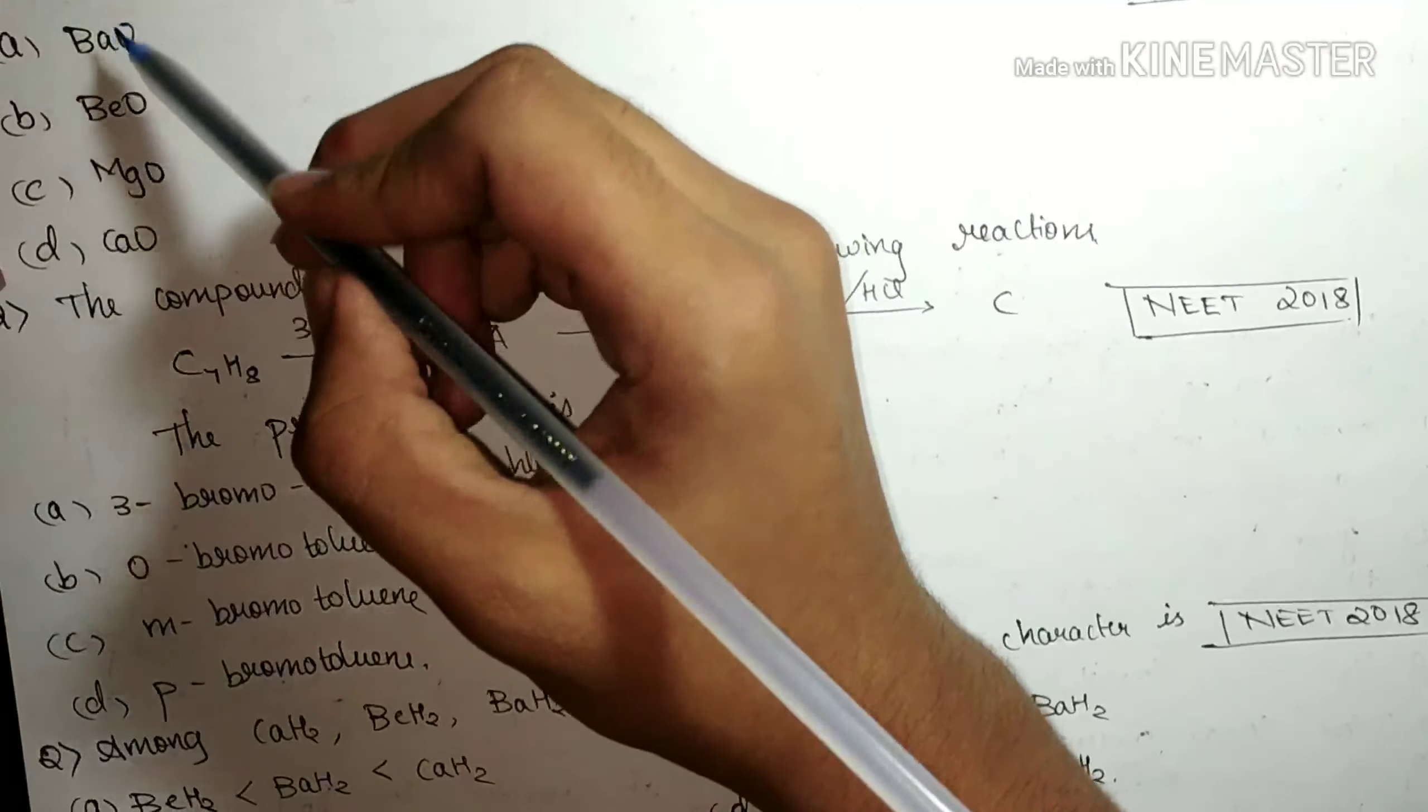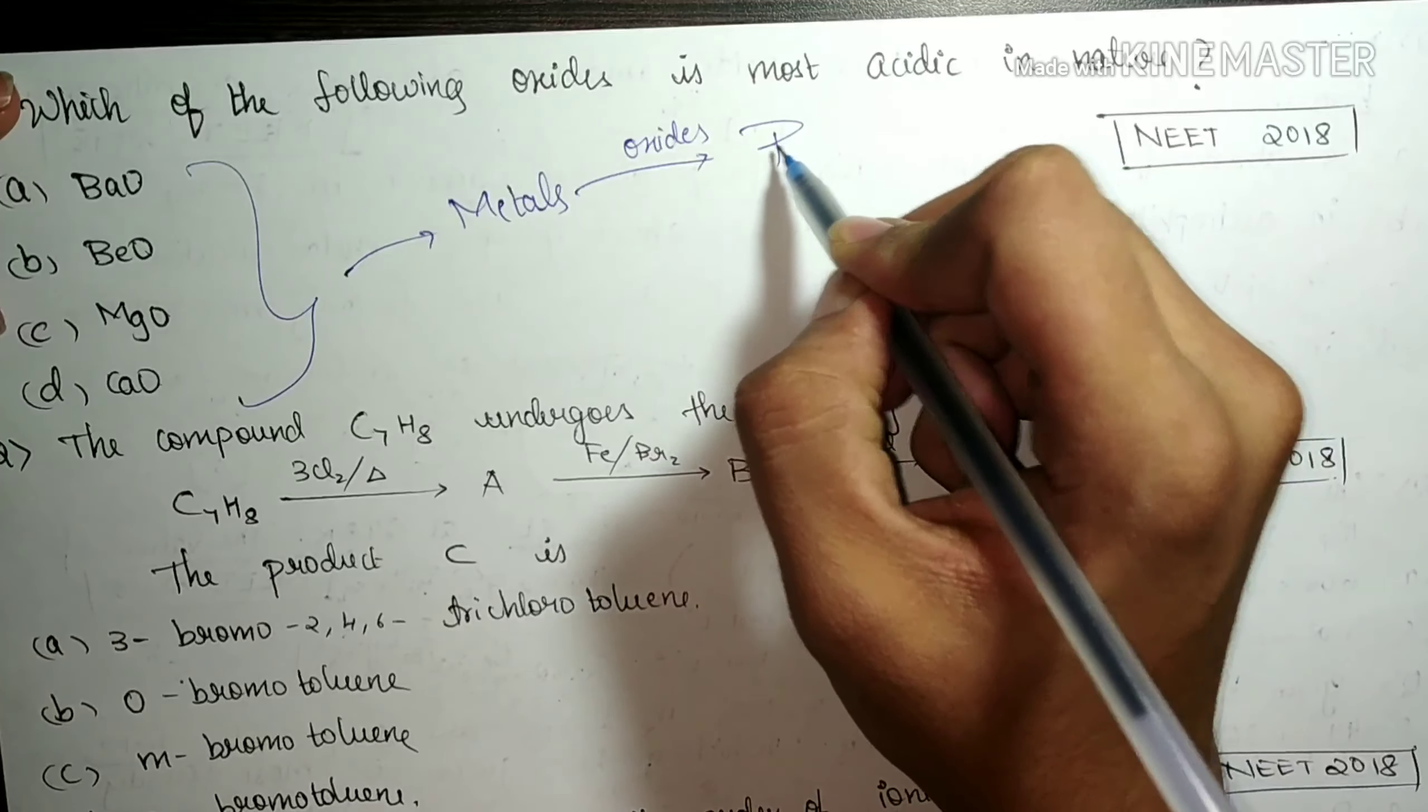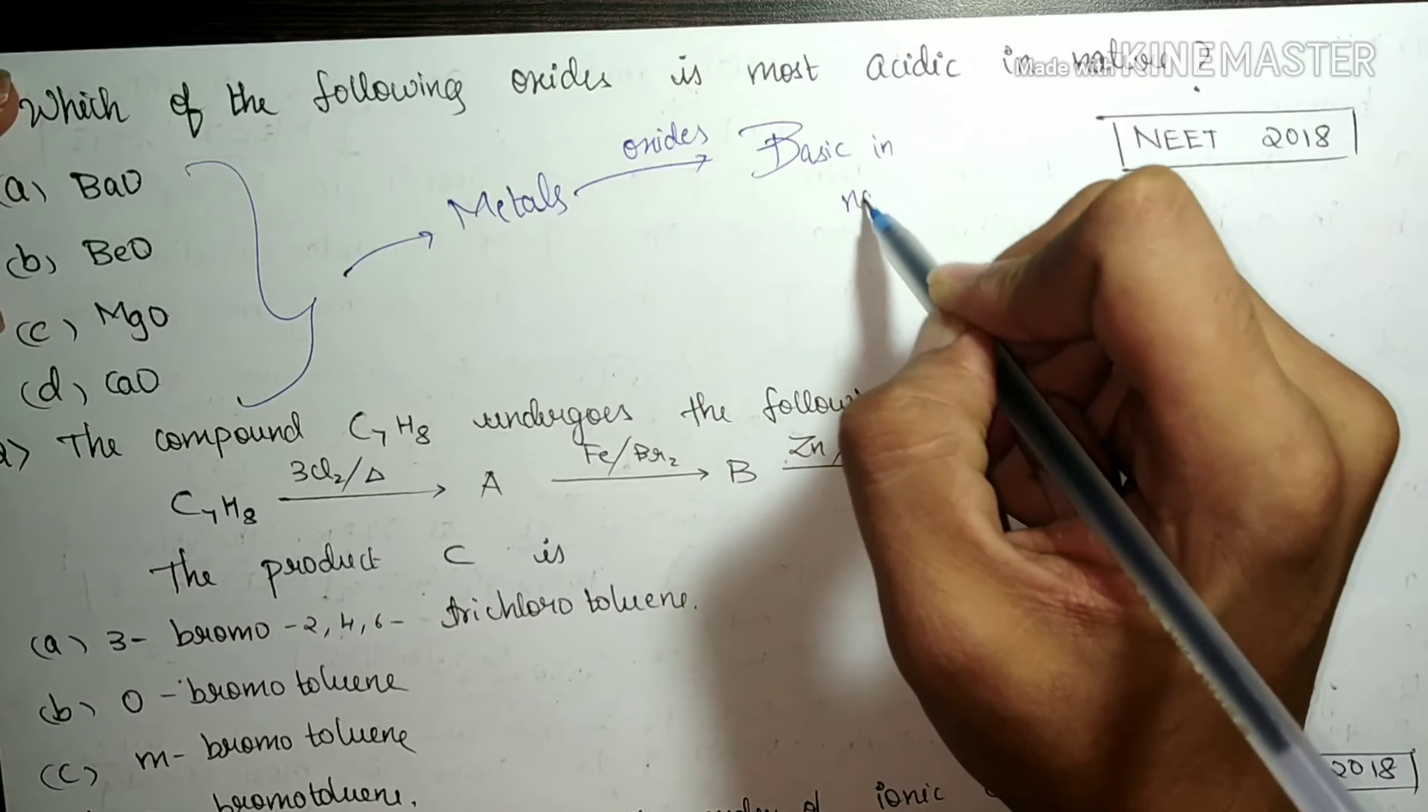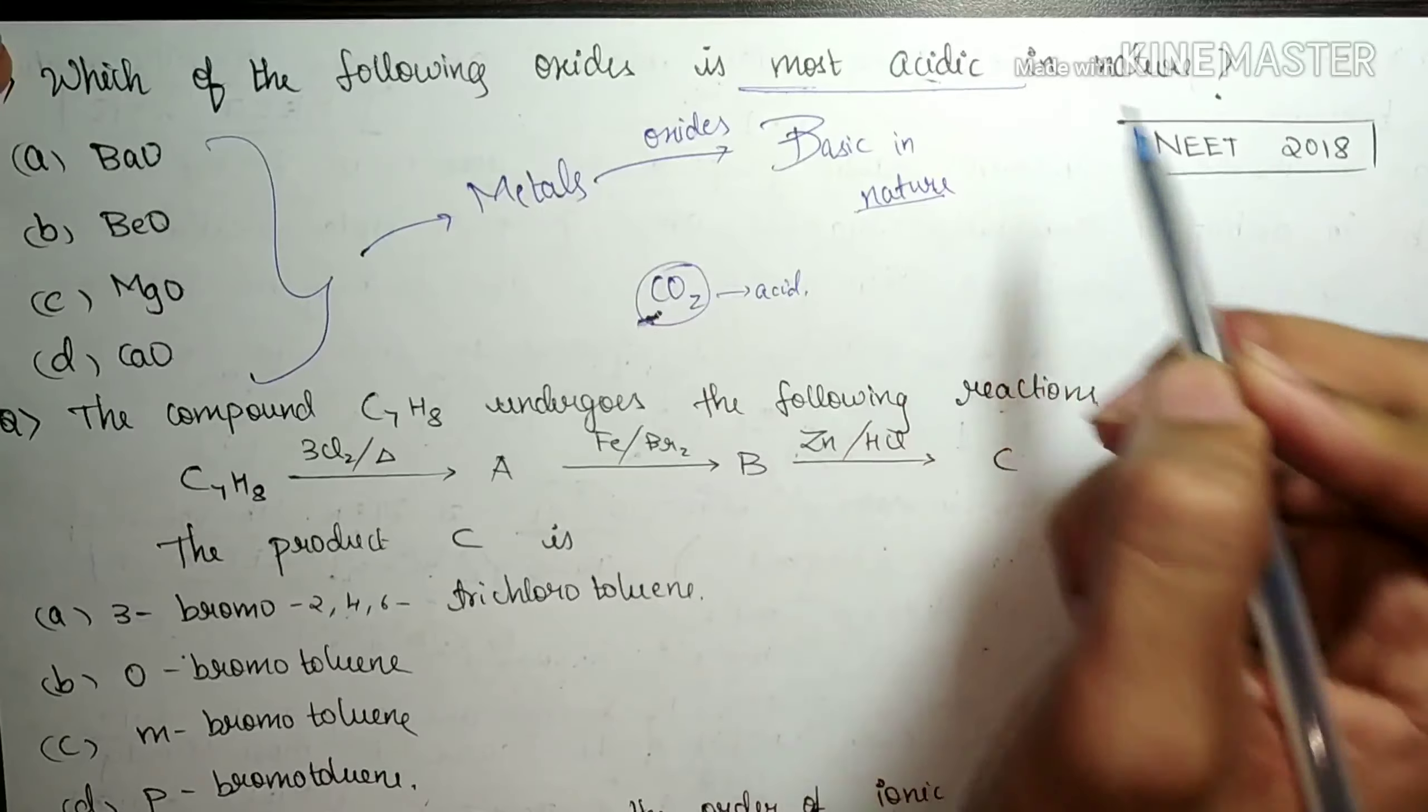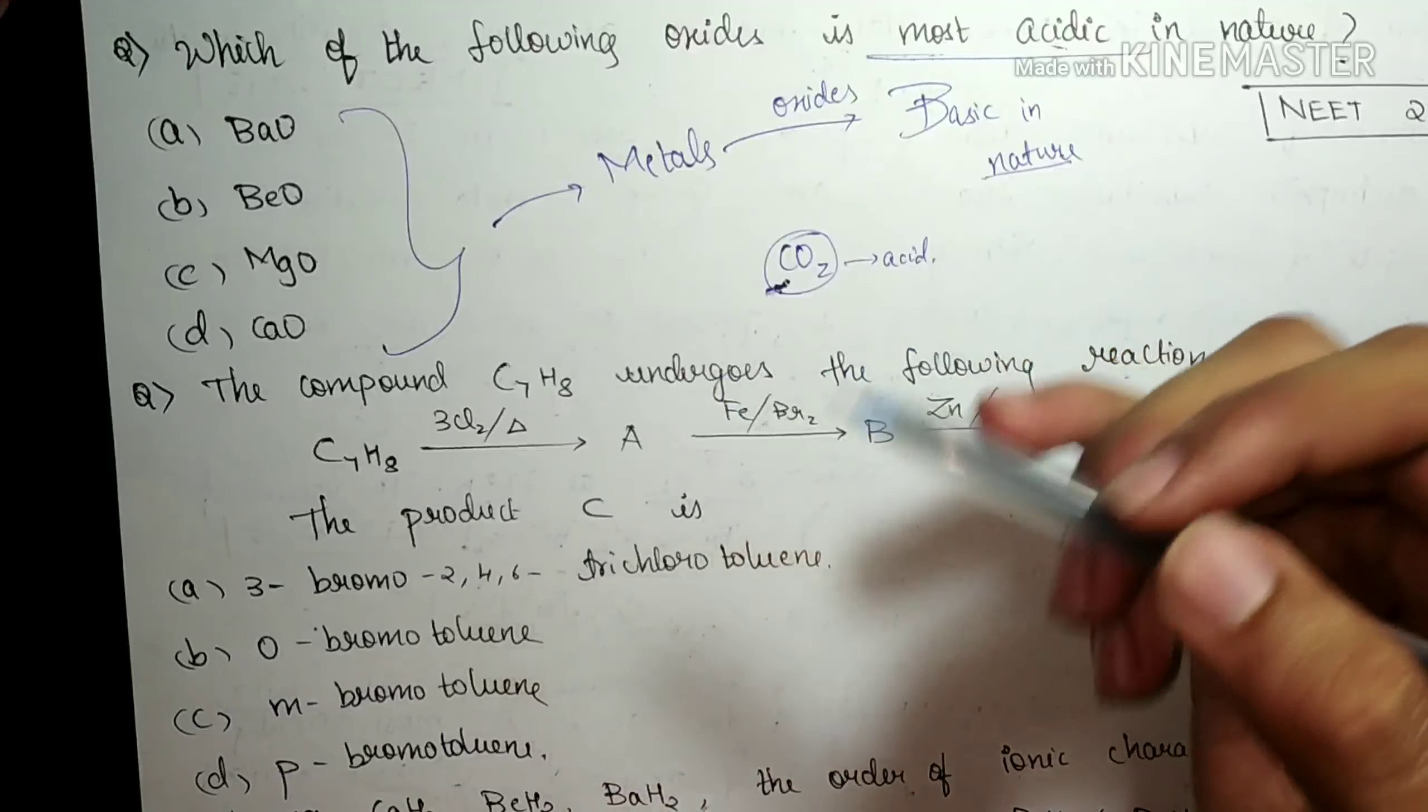Let's see the fifth question. It says, which of the following oxides is most acidic in nature? The options given are BaO, BeO, MgO and CaO. You can see that all of these are metals. And oxides of metal, what is their nature? Obviously, they are basic in nature. And oxides of non-metals are acidic in nature. In this case, you can take the example of CO2, which is acidic, where C is a non-metal. So metals oxide will be basic in nature. But they are asking which is most acidic, which is least basic?